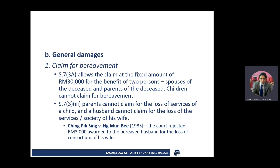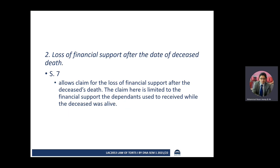The fixed amount of 30,000 ringgit is given to both the spouse and the parents. Under Section 7(3), the parents cannot claim for the loss of service of a child, and the husband cannot claim for the loss of service or society of his wife. In the case of Ching Pig Sin, the court rejected a claim for damages by the bereaved husband for the loss of consortium of his wife. There can also be a claim on loss of financial support after the date of the deceased's death — Section 7 allows this claim.